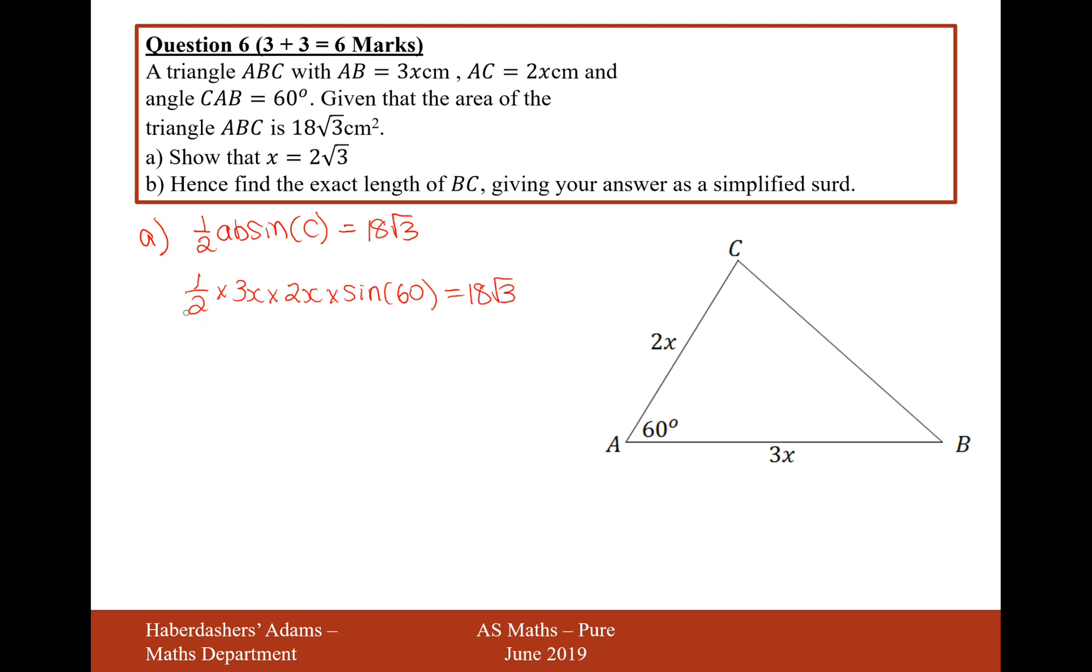If we simplify this, it's going to be a half times 3x times 2x. That'll be 6x squared. That'll be 3x squared once you've halved it. And then times sine 60, so 3x squared times root 3 over 2 equals 18 root 3.